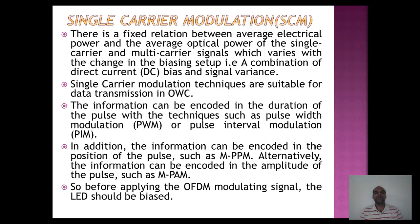Information can be encoded in the duration of the pulse, such as pulse width modulation and pulse interval modulation. Additionally, information can be encoded in the position of the pulse, as in PPM. There is also PAM, which encodes information in the amplitude of the pulse.